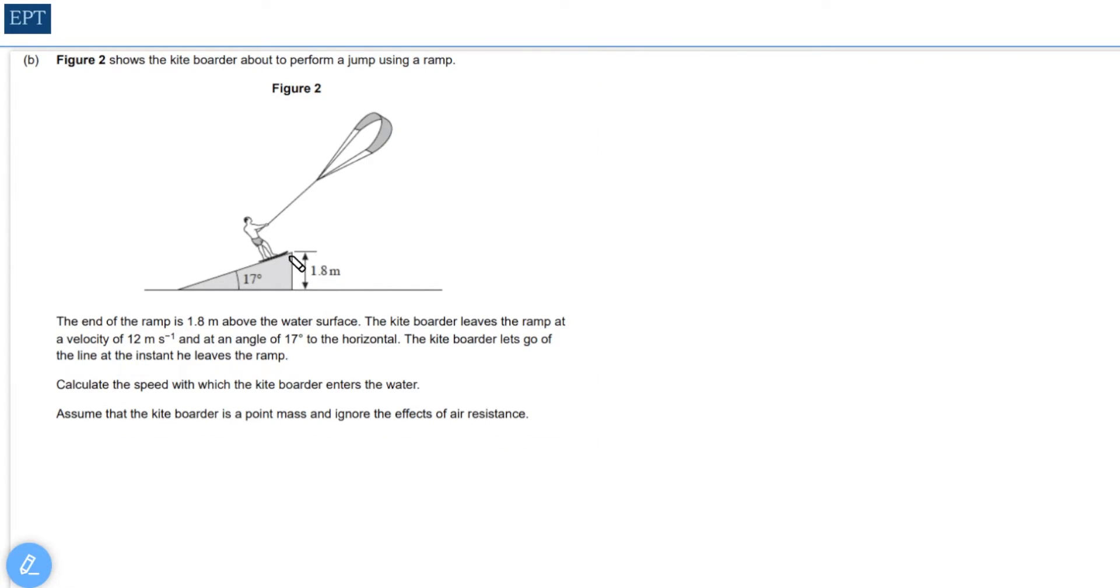The way this problem is set up is that we can consider our kite boarder to be a blob or a point mass at the end of the ramp traveling upwards at 12 meters per second, and we're given the angle 17 degrees there.